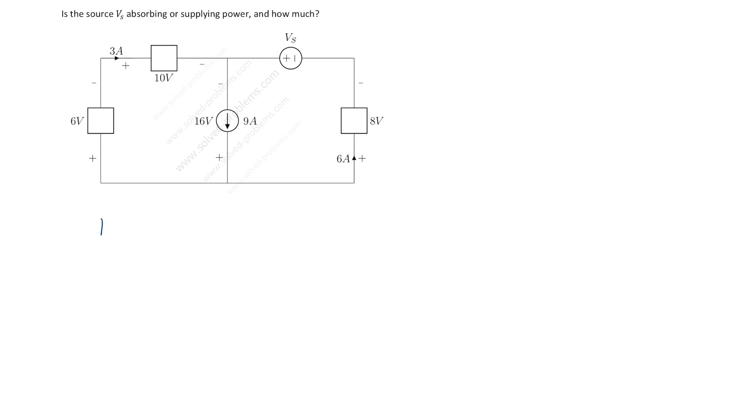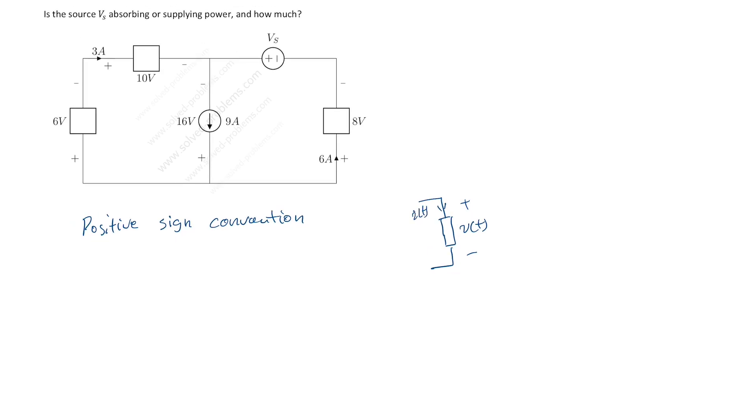So let's start with positive sign convention. So positive sign convention. So what it says, the positive sign convention says that for the element, if you define Vt and It such that the current is entering from the positive reference of the voltage that you defined, so here current It is entering from the positive reference.